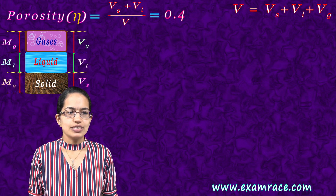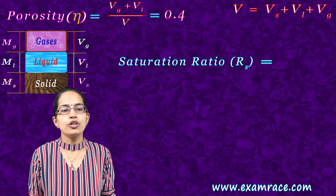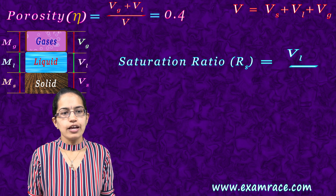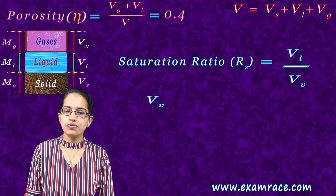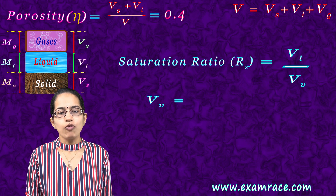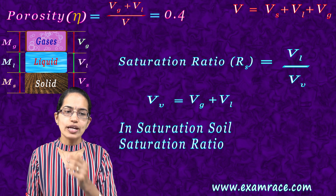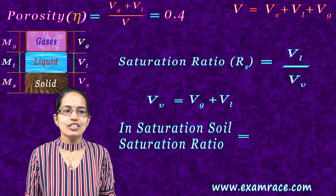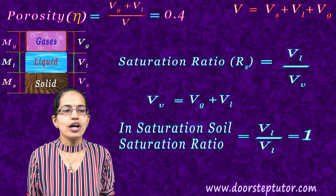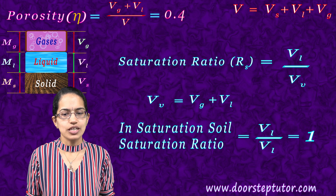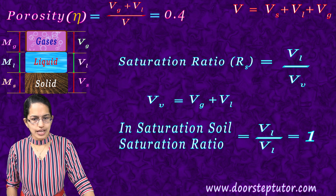The next concept is the saturation ratio. This saturation ratio is the volume of the water divided by the volume of the voids. The volume of the voids is the volume of the gas plus the volume of the water. What would happen in the case of saturated soil? There is no volume of gas, so it would be volume of water divided by volume of water, which turns out to be 1. So for saturated soil the saturation ratio is 1, however it would be less for dry soil.